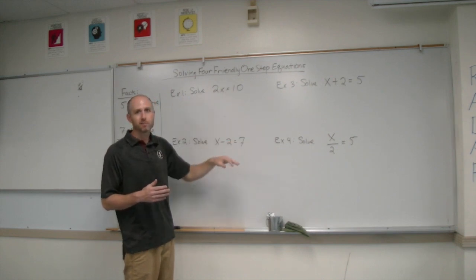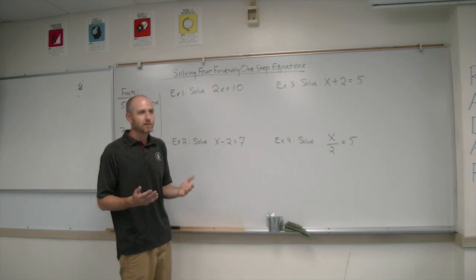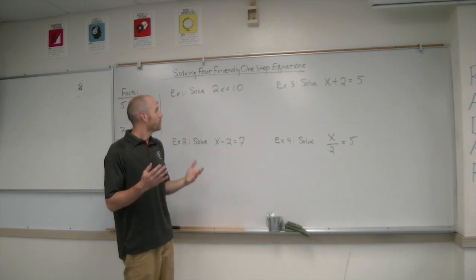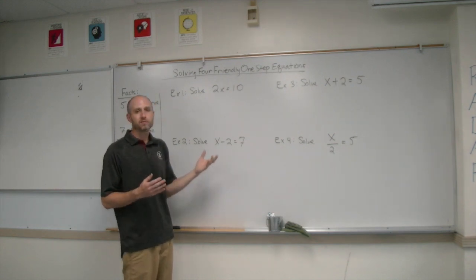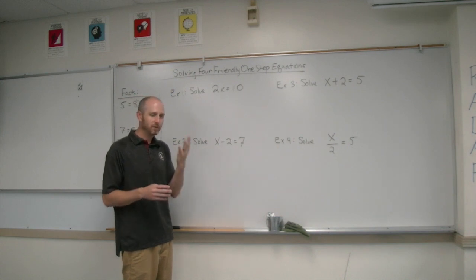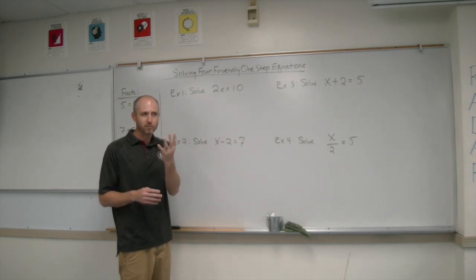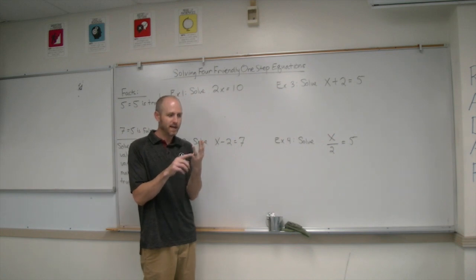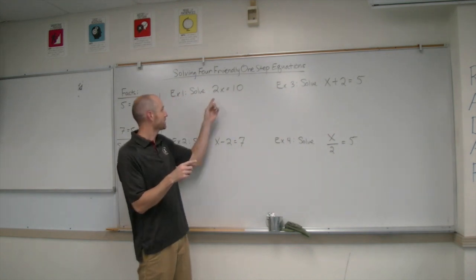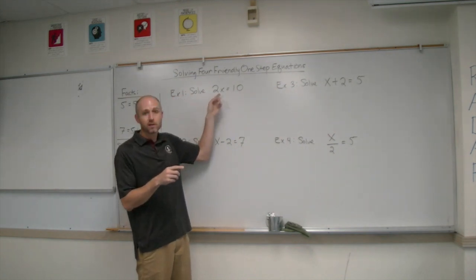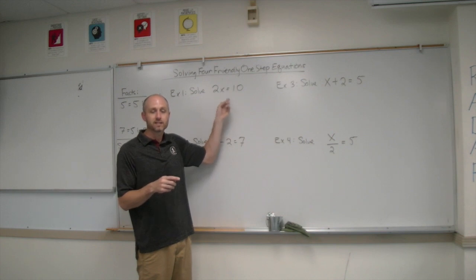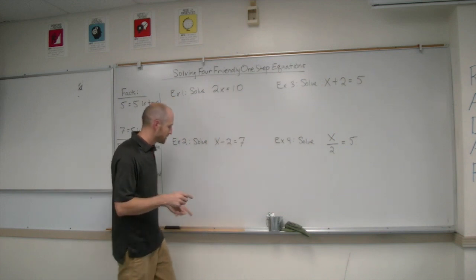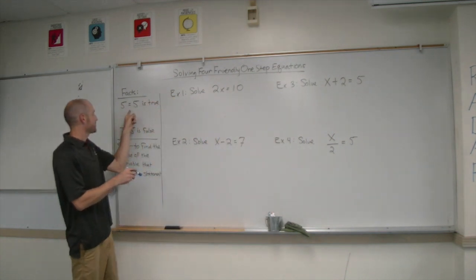Put the solution out of your mind for a second and let's focus on a method. We can use the properties of equality, which basically say there are four basic properties of equality: if you want to add, subtract, multiply, or divide something to this equation, you must do it to both sides so that it stays true.